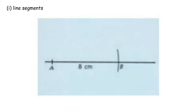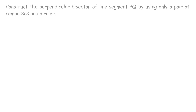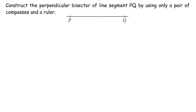3. From point A, with the distance of 8 centimeters on the compasses, mark point B on the line. 2. Perpendicular bisectors: a perpendicular bisector is a line segment that divides a given line segment into two parts of equal measurement. If line AB is perpendicular to line segment CD and divides CD into two parts of equal length, then line AB is the perpendicular bisector of CD. Construct the perpendicular bisector of line segment PQ using only a pair of compasses and a ruler.